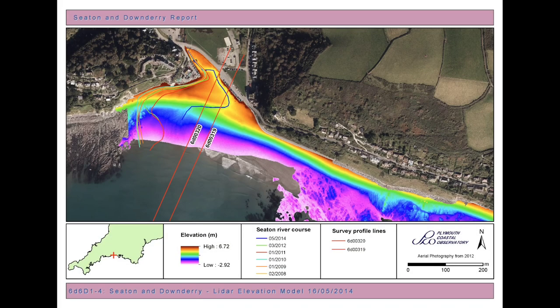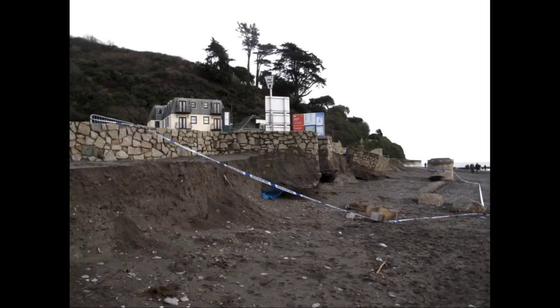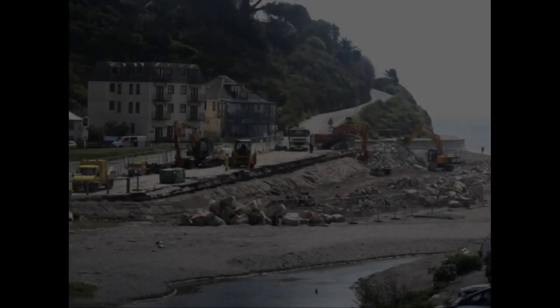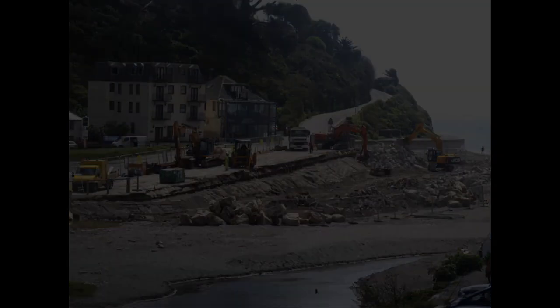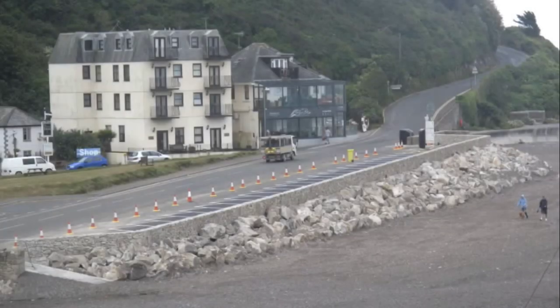Due to the extreme amounts of rainfall during the storms, the river at Seaton beach changed course directly in front of the car park wall, as captured by our LiDAR data shown on this map. Eventually, the wall became very unstable and collapsed onto the beach. The wall was then rebuilt and large rocks were placed in front of it to provide protection from future storms.